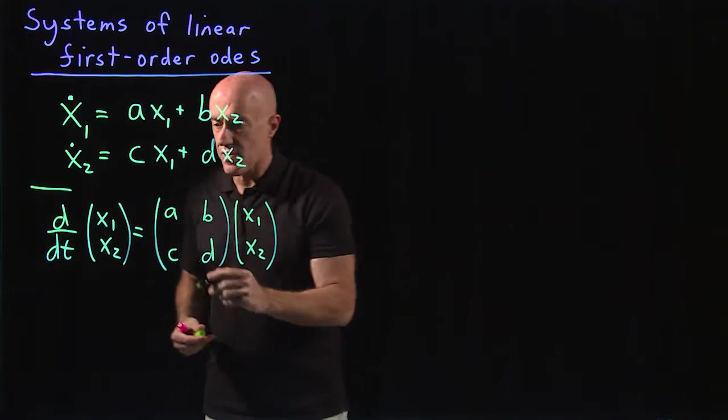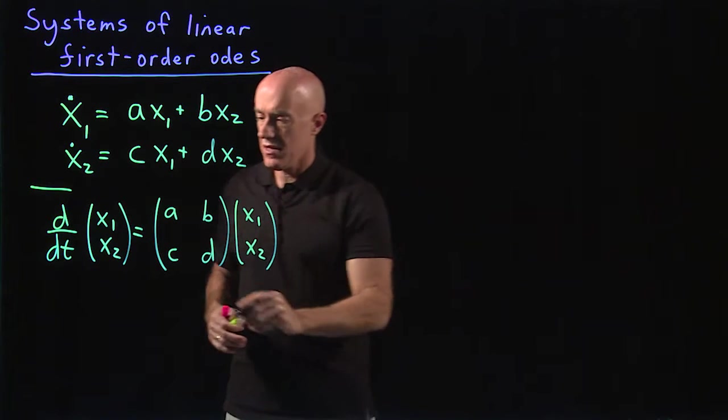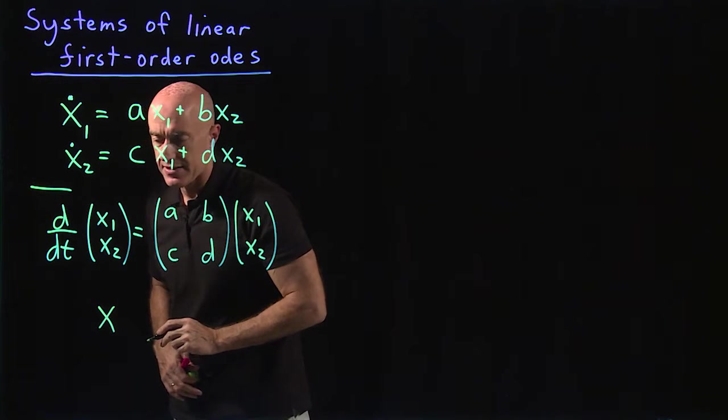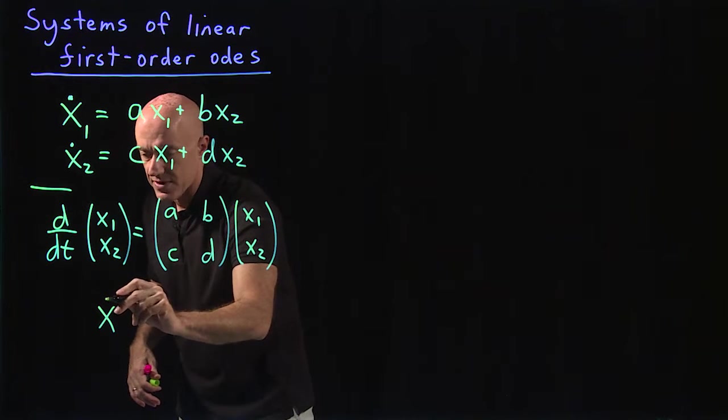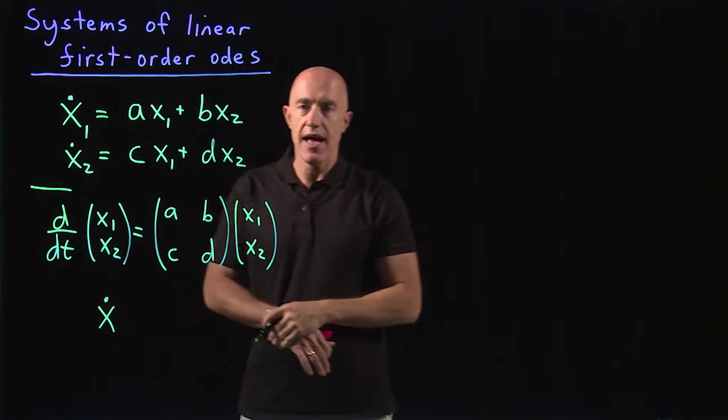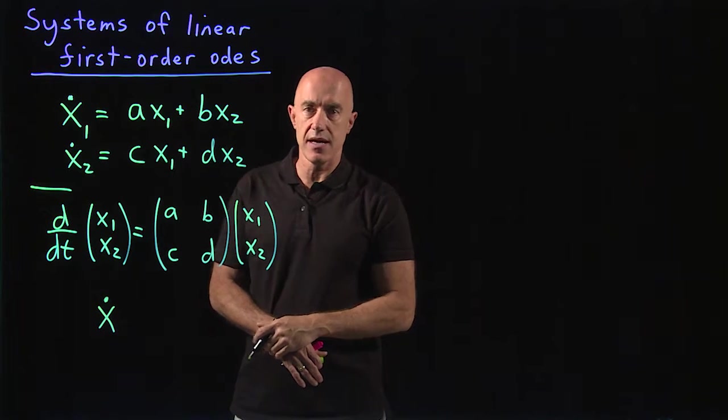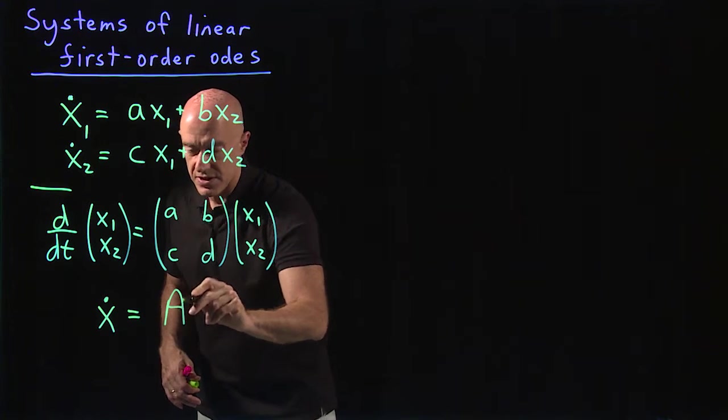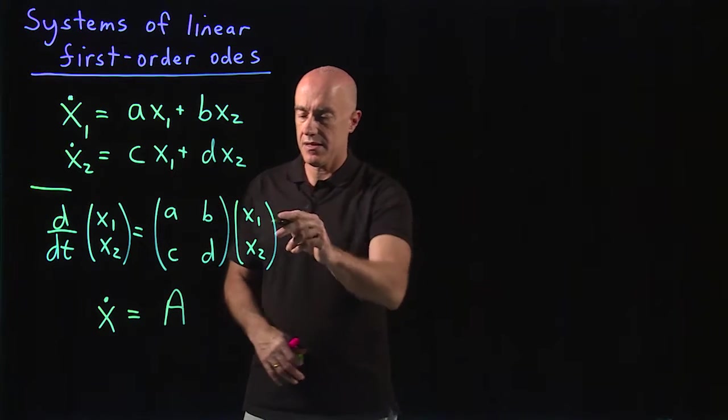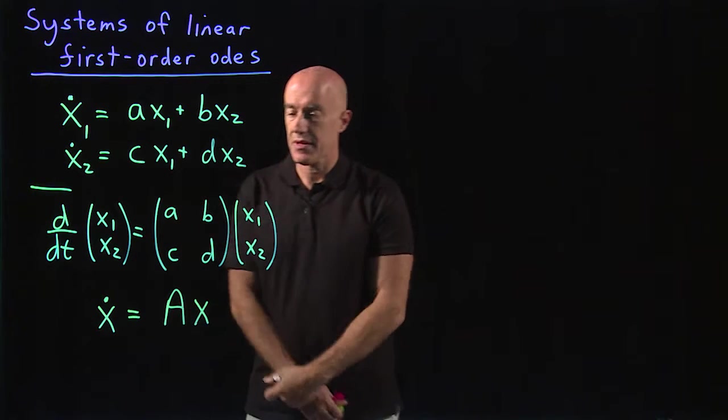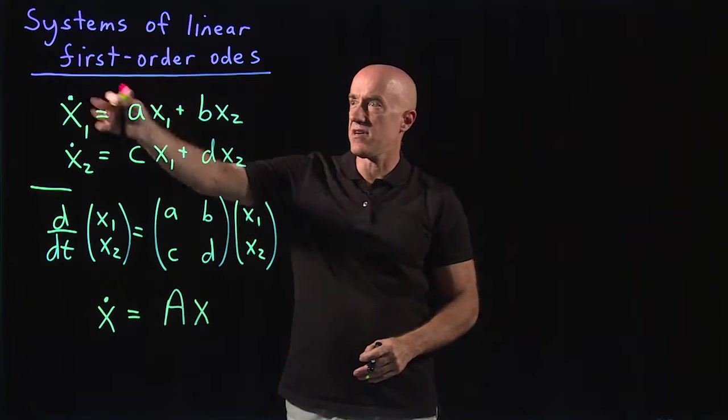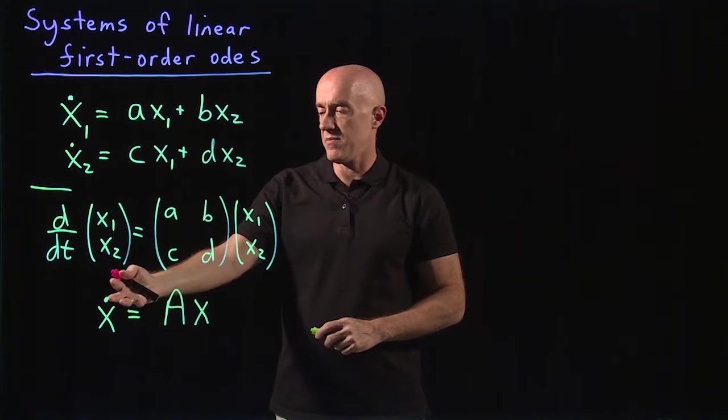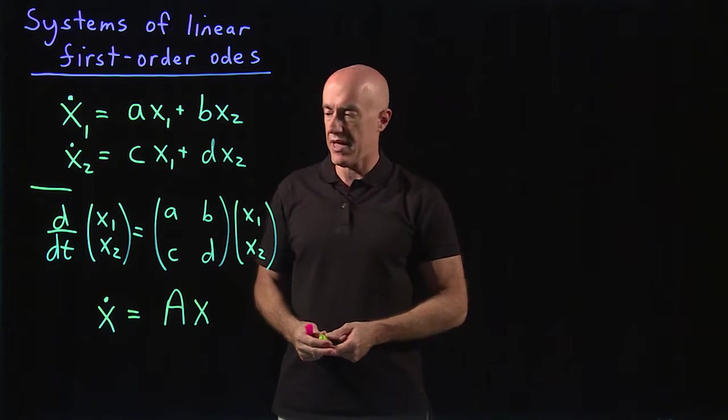If we like to write it more succinctly, we can just call this column vector x1, x2 simply x, and it's the time derivative, so each component has a time derivative. So I'll write that as x dot. And that's equal to a 2 by 2 matrix, which I'll write capital A, times the column vector x. So the system of first-order linear equations can be simply written as x dot equals Ax.